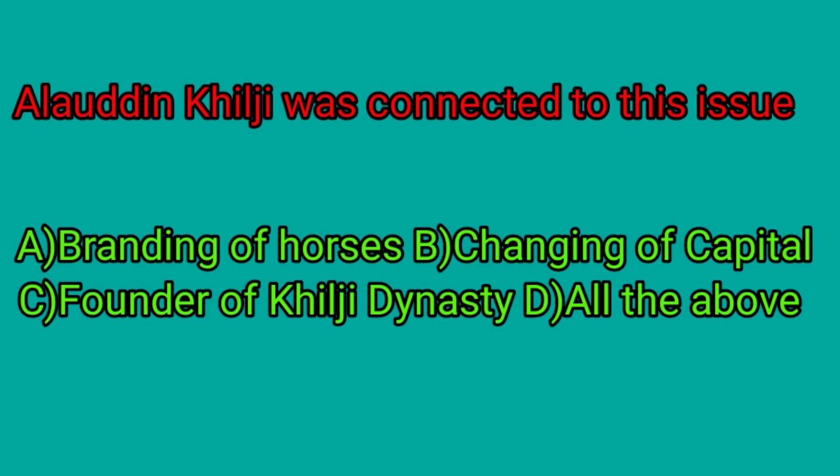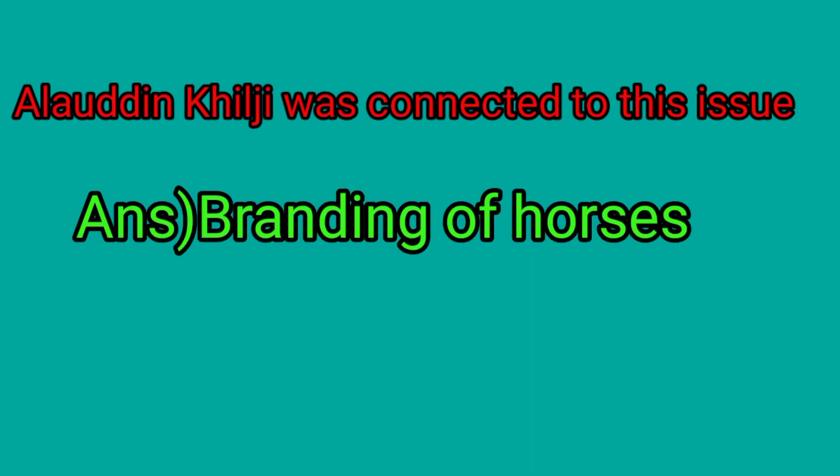Allahuddin Khilji was connected to which issue? A. Branding of Horses. B. Changing of Capital. C. Founder of Khilji Dynasty. D. All of the above. The correct answer is Branding of Horses. Allahuddin Khilji introduced the branding of horses to prevent the substitution of a bad horse for a good one.